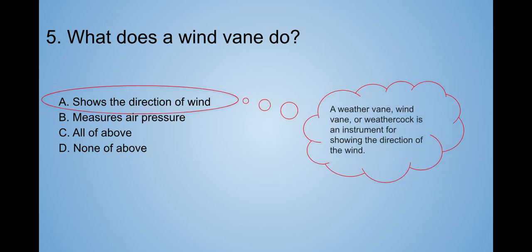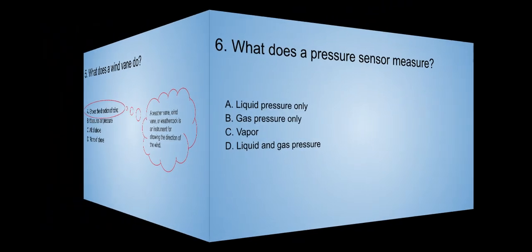Oh, a wind vane shows the direction of wind. Okay. A weather vane or a wind vane or a weather cock is an instrument for showing the direction of the wind. Simple.